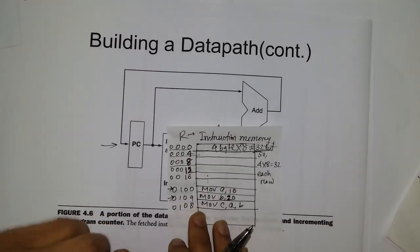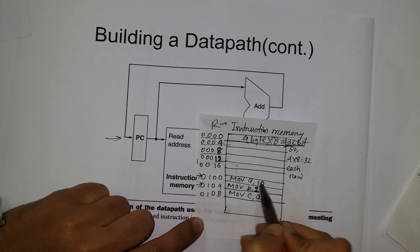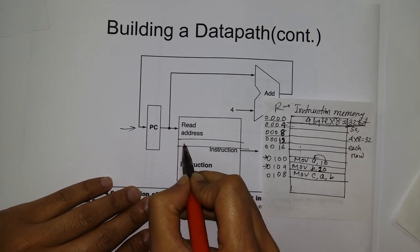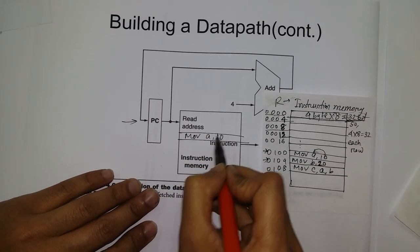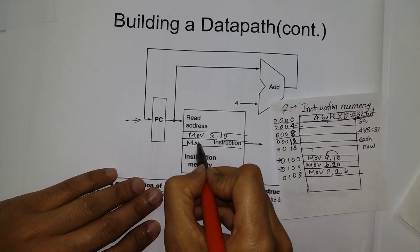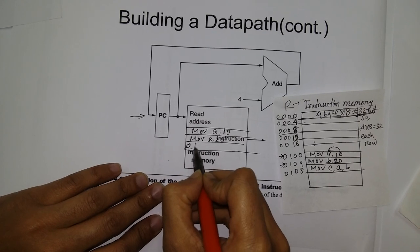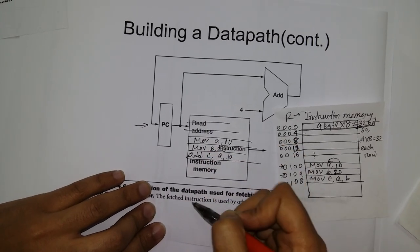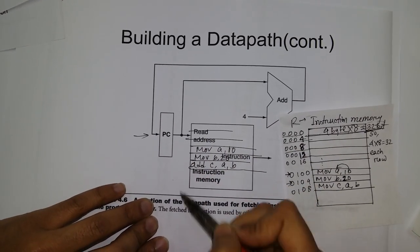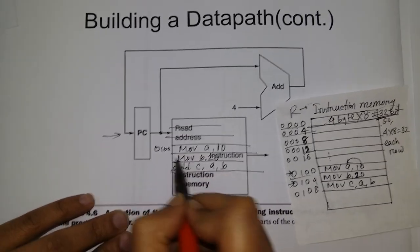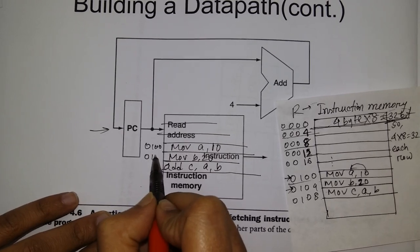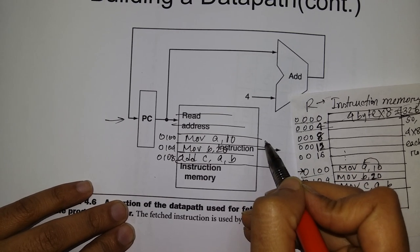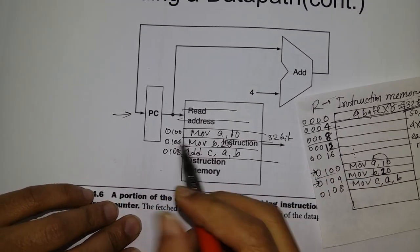For example, the first instruction is move a equals 10, then move b equals 20, then add c a b. The instruction memory is byte addressable. Suppose these addresses are 0100, 0104, 0108. The byte address interval is 4 bytes, meaning 32 bits each row.